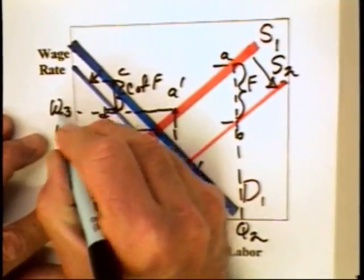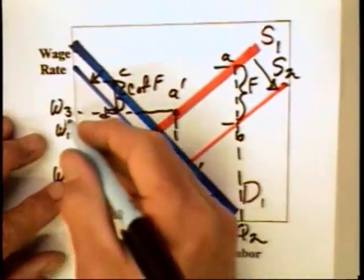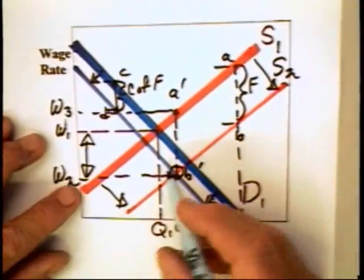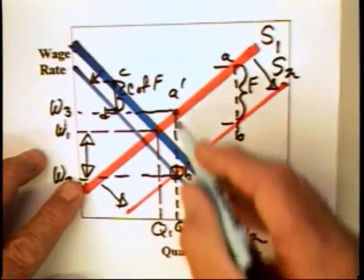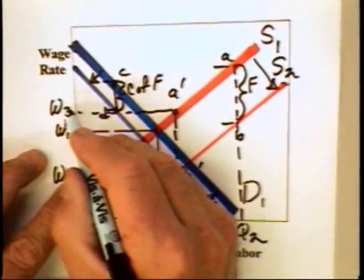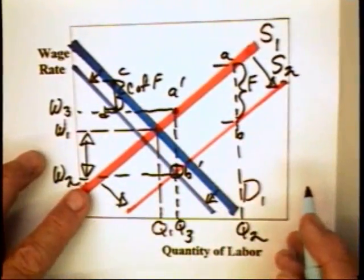When you add in the fringe benefits, the workers get a wage of W3. That is, they get a money wage equal to W2, but then they get the fringe benefit equal to A prime to B prime, which adds up to W3. So the workers are better off.